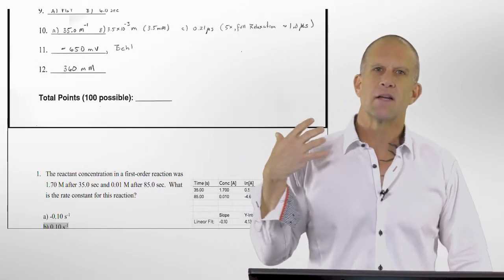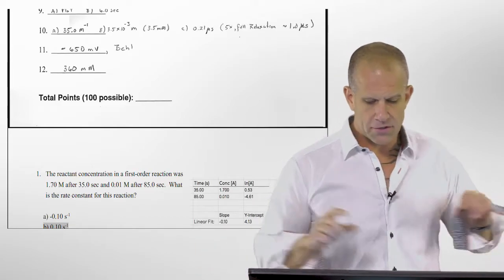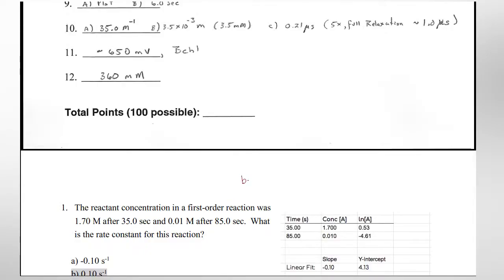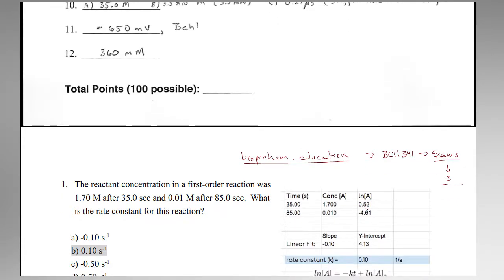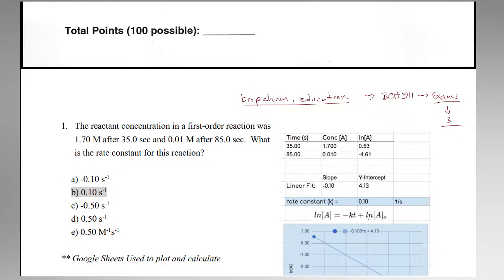The solutions are made available at biopchem.education under BCH 341 in the exams section. This is exam number three. I've included the exam, a short set of solutions, and a full set of solutions. What I mainly want to do in this video is cover more conceptually some of them than exact working out, which I provided on the solution set. This is a PDF version you can download directly from this website.